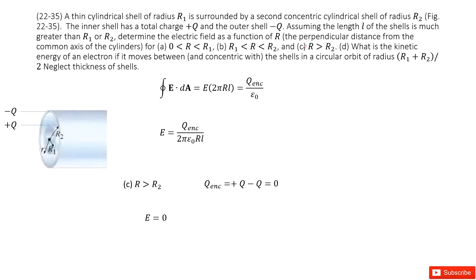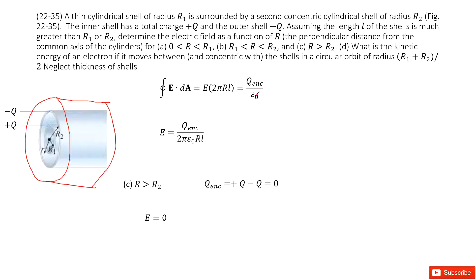Next, if R is larger than R2, outside both shells, we draw a Gaussian surface enclosing everything. The electric field times the Gaussian surface area equals the enclosed charge divided by epsilon naught. Looking at the enclosed charge, we have positive Q and negative Q, so the net charge is zero. Therefore, the electric field E equals zero.